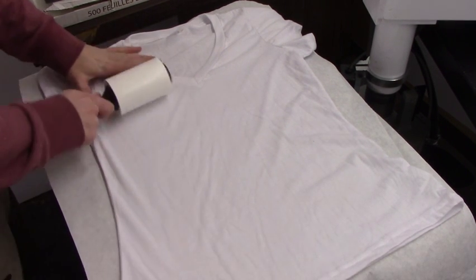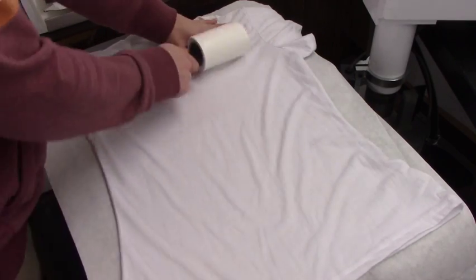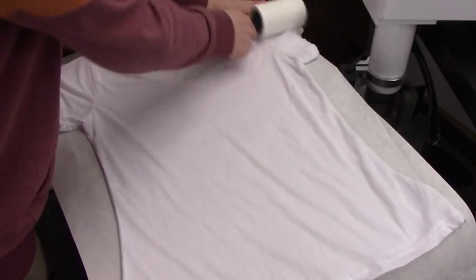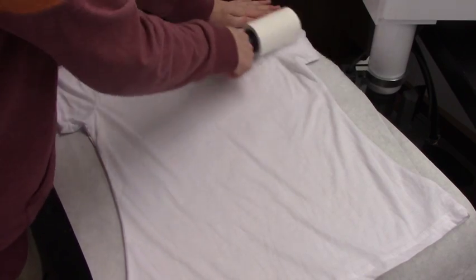Place your shirt on the heat press and use a lint roller to remove any lint or debris from the manufacturing and shipping that will become more pronounced during sublimation.